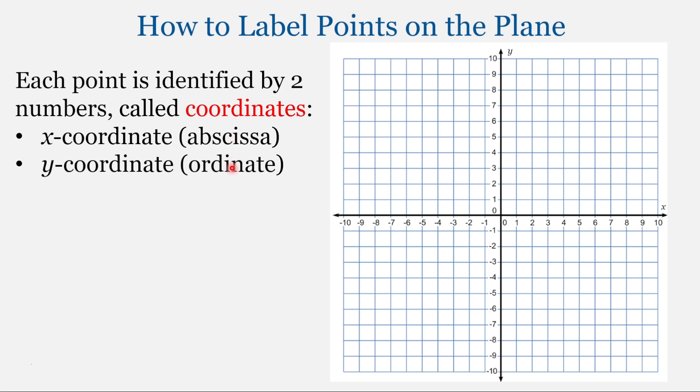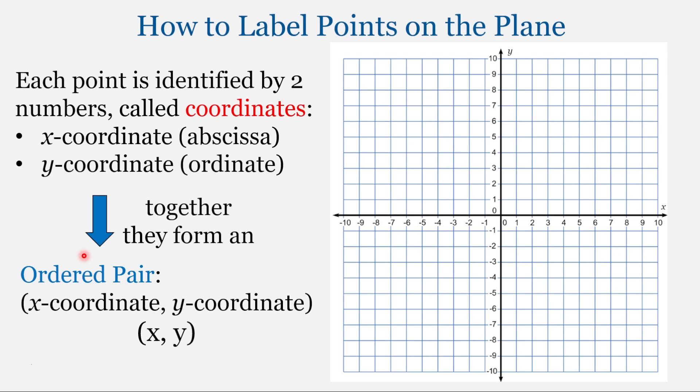These two terms are not commonly used. You will most likely always hear x-coordinate and y-coordinate. And then together, these two numbers form an ordered pair. So you have two numbers, a pair of numbers, and the order matters. We're going to list the x-coordinate first, and then the y-coordinate.